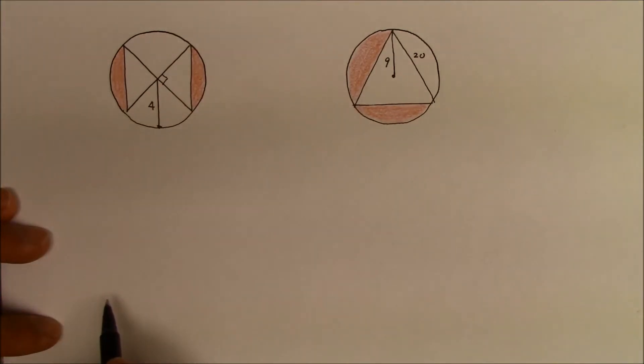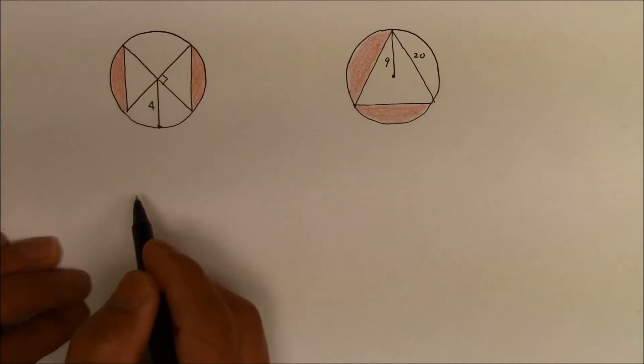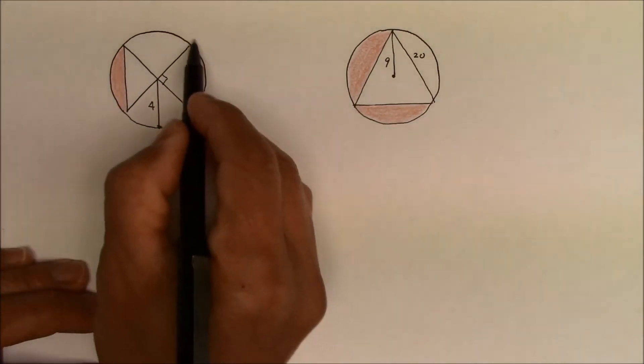What do you think? Here's how I would do it. First things first, let's find the area of the overall circle.